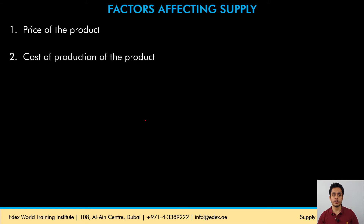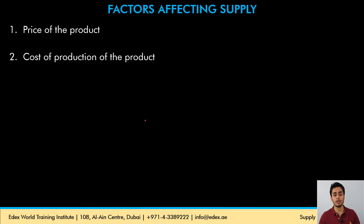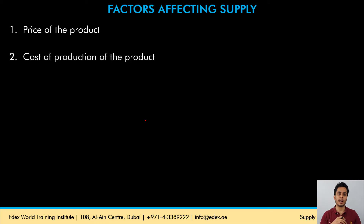The cost of production of the product also affects the profits directly. When the cost of production is rising, the product is less profitable, so a rational producer will produce and sell less quantities. Whereas when the cost of production is falling, the product is more profitable, and the rational producer will produce and sell more of that product.